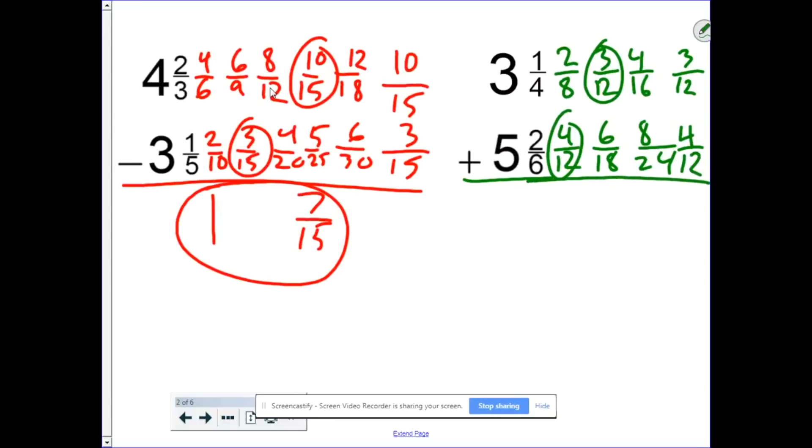Well, again, start with the fractions. 3 plus 4 is 7. So that gives me 7 12ths. 3 plus 5 is 8. So my answer is 8 and 7 12ths.